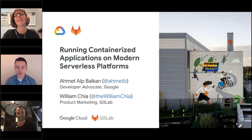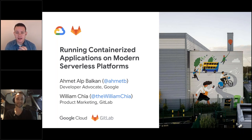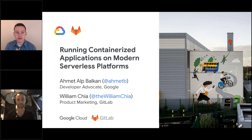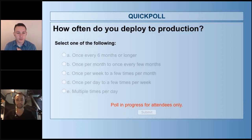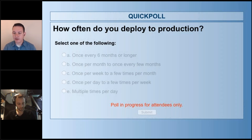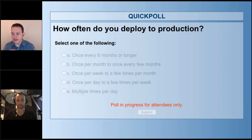We would love to kick it off with a poll, just to ask a few questions of the audience, and we'd be happy to share the results as well, to see who's on the call today and how we can shape the content. The first question is: how often in your organization do you deploy to production? Options range from every six months or longer, once per month or every few months, once per week or a few times per month, to once per day or multiple times per day. Can we show the poll results, Charlene?